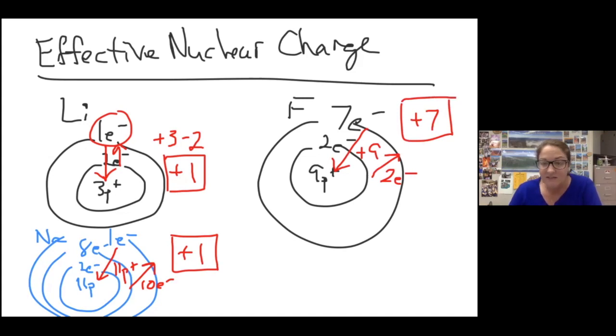Not coincidentally, fluorine has seven valence electrons and is in group seven. Fluorine, chlorine, bromine, iodine, everything in group seven is going to have an effective nuclear charge of plus seven.